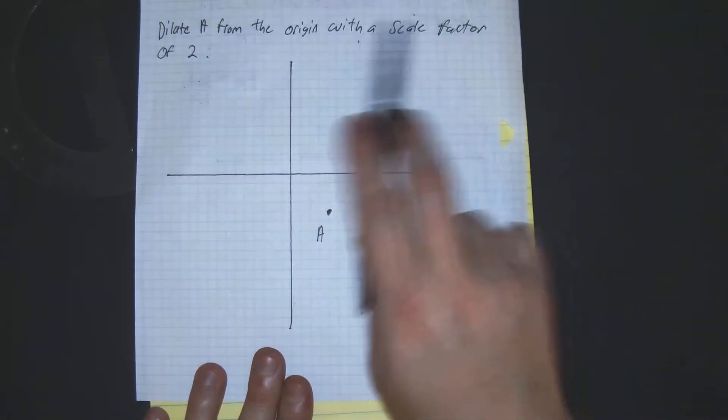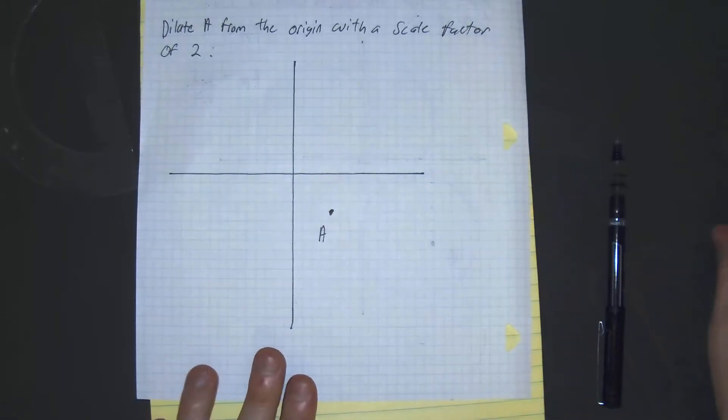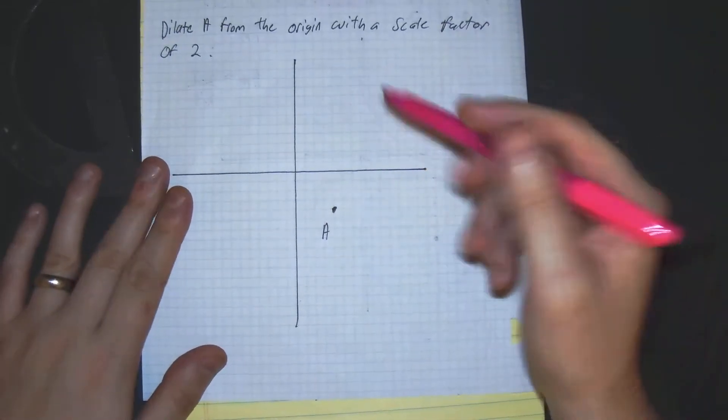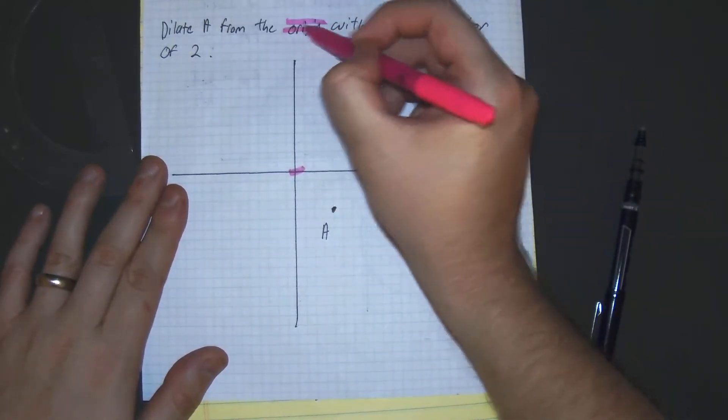Dilate point A from the origin with a scale factor of 2. First thing when you do this is you need to find the point of dilation from the origin, so our point of dilation is right here, the origin.